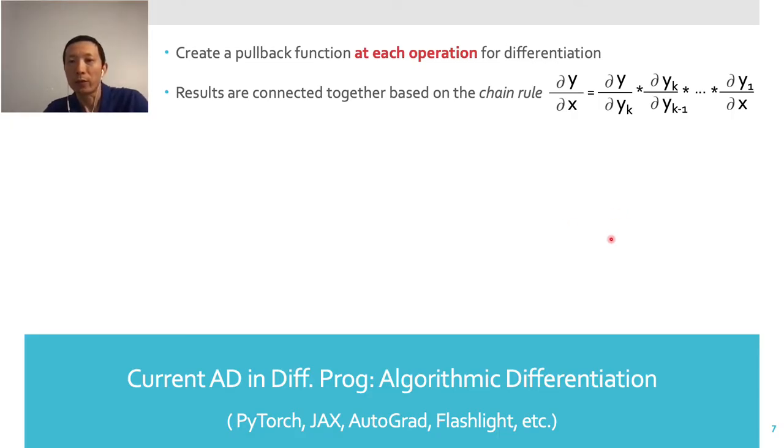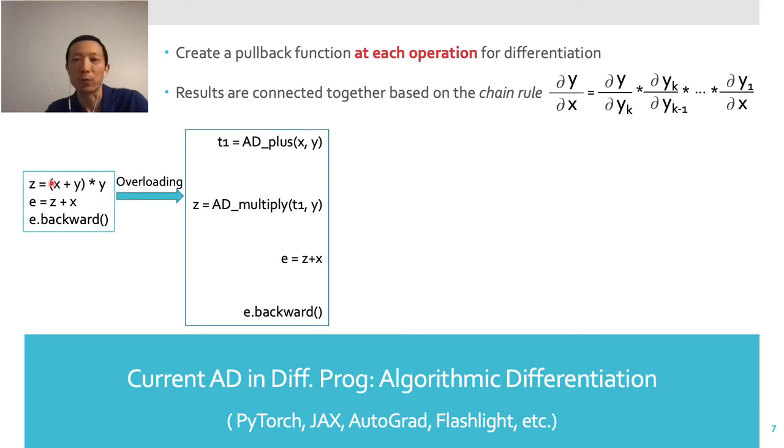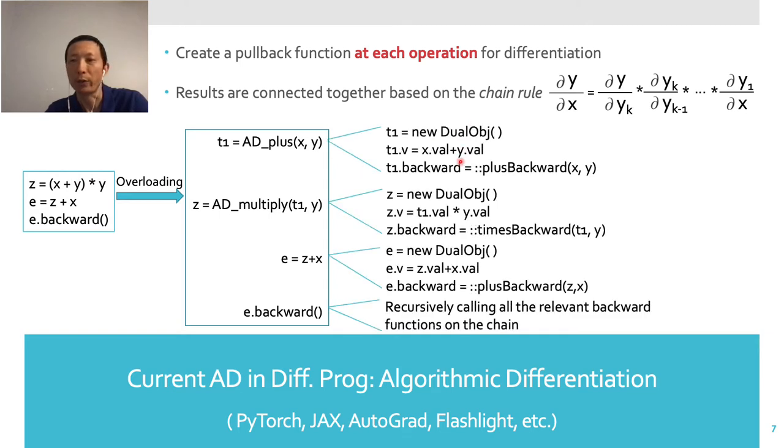The approach taken by current differentiable programming tools is algorithmic differentiation. Each operation in the primal code is overloaded. For instance, this x plus y becomes such a sequence of operations during runtime. It creates a new object t1. It sets the value of t1 to the primal result.